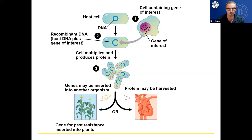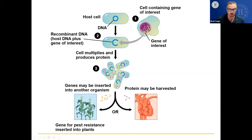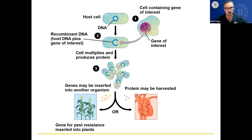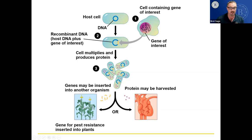Corn is interesting because it's in almost all of our processed food products. One of the genes you could put into corn is Roundup resistance — you can spray Roundup, which kills all kinds of plants, but this corn has a gene making it impervious to Roundup, so it kills the weeds that would steal nutrients and water from the corn. More importantly, we don't want to eat pesticides. So you put a gene into the corn that makes it resistant to the pest — when the pest eats it, it dies or the corn tastes terrible to the pest.